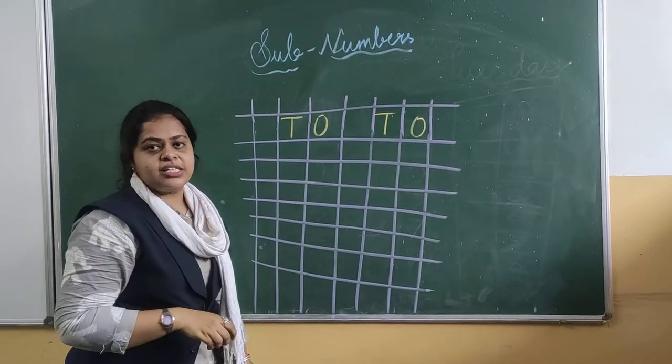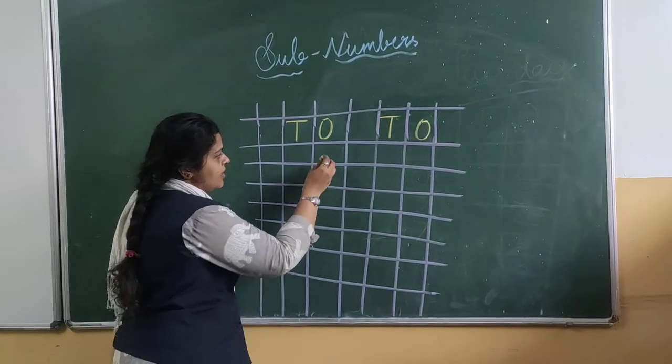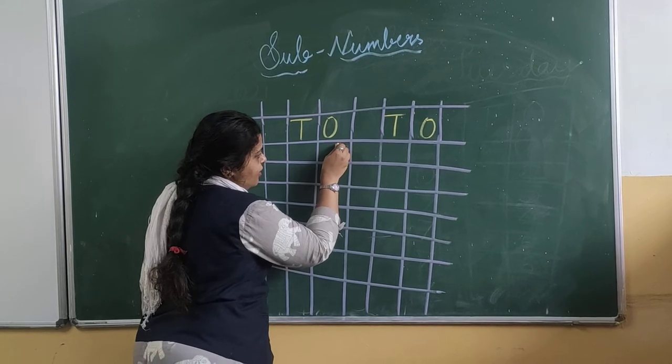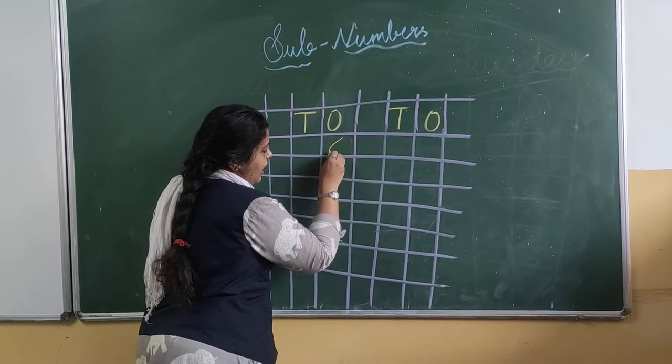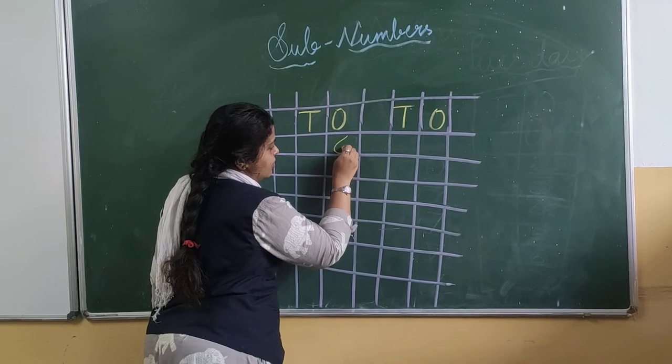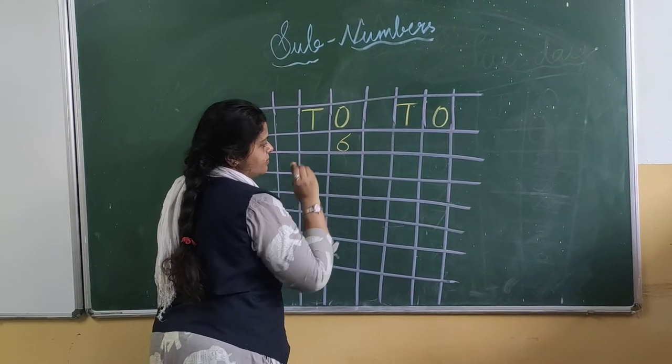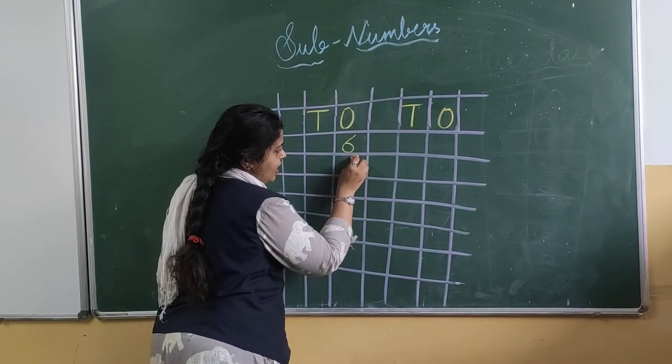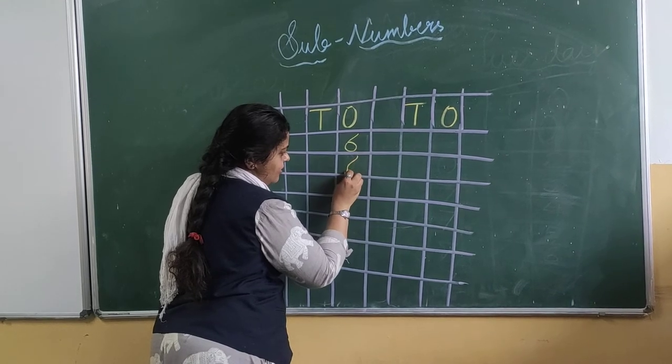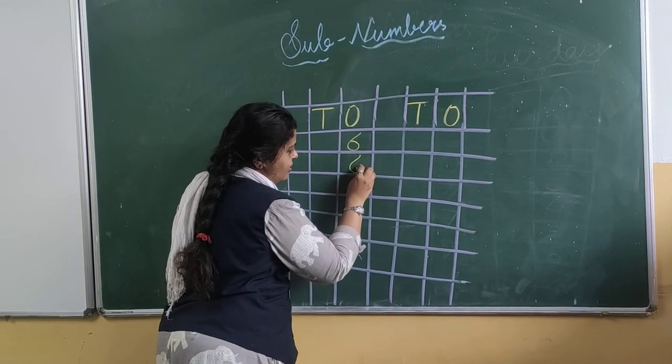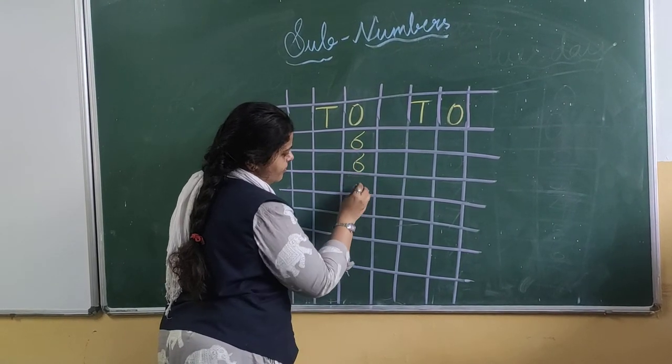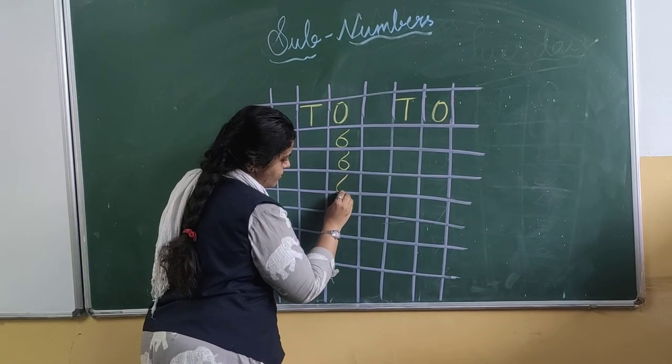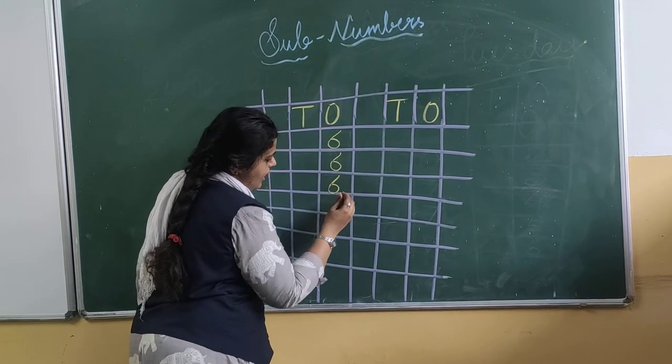Ok children, let us see how to write the number 6. Take a right slanting line and go with the inner curve and join the line. Once again, right slanting line and join with the left curve to the line. Once again, join this line.